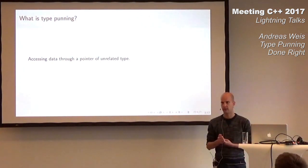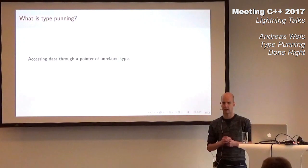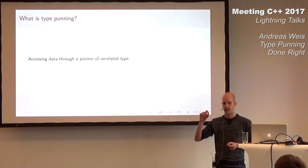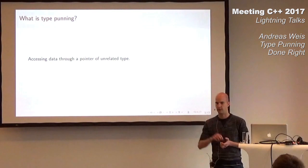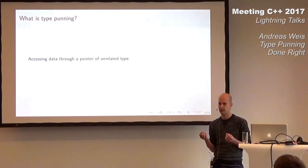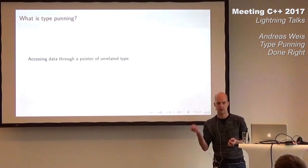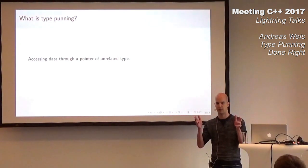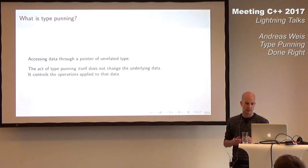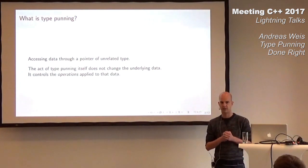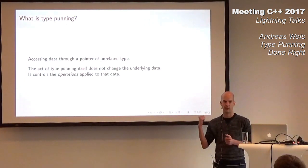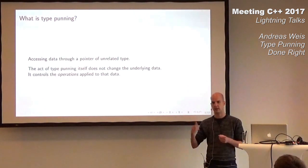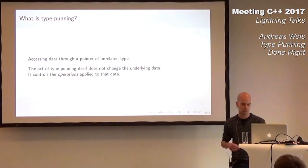The important thing to realize here is that the act of making that pointer point to the other object does not actually change the contents of that object in memory. The bits of A in memory will still stay untouched. The only thing that you actually change is the type of operation that gets applied to this data if you access it through this new pointer.